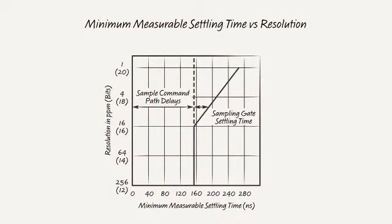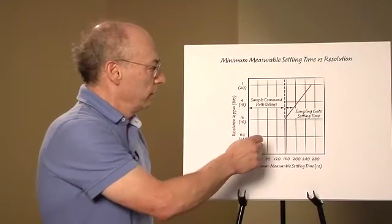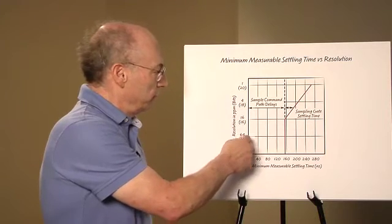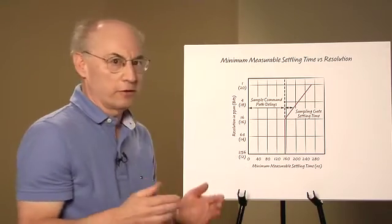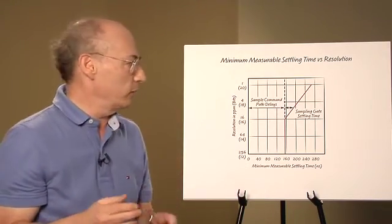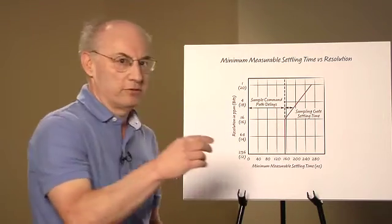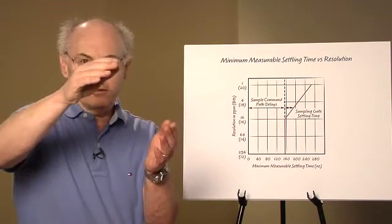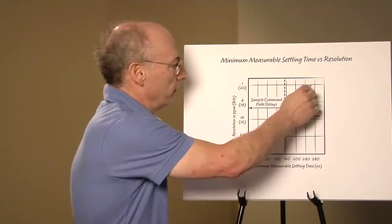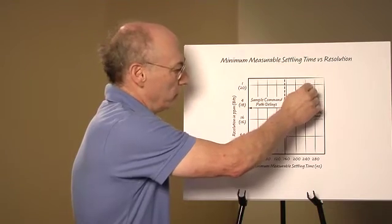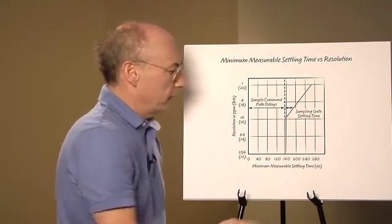This is a plot of the capabilities of the settling time described in application note 120. This is the best you can do if you had an ideal DAC. From about 12 bits to about 16 bits you're limited by sample command delays. There's nothing you can do about that in this incarnation of the measurement. Beginning about 16 bits the settling silhouette, the profile of the switch coming on begins to introduce additional time delay errors. And at a part per million you're at around 240, 250 nanoseconds.